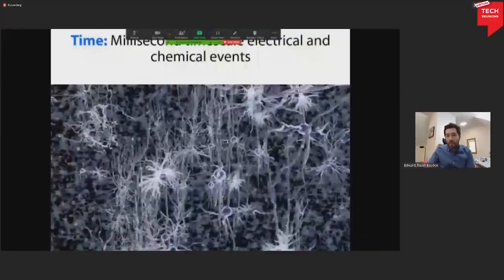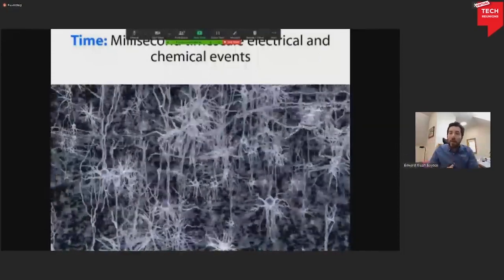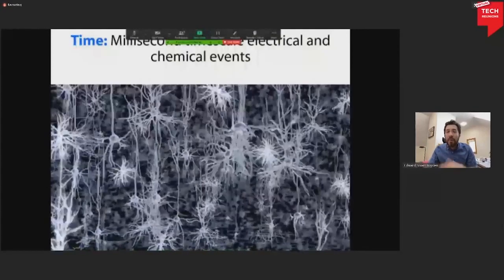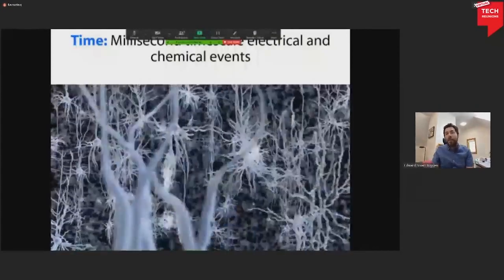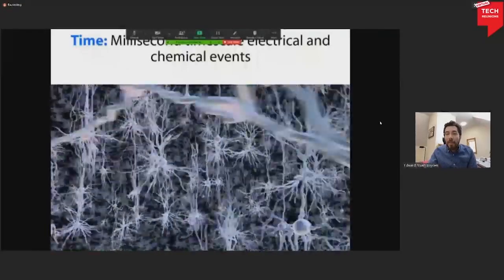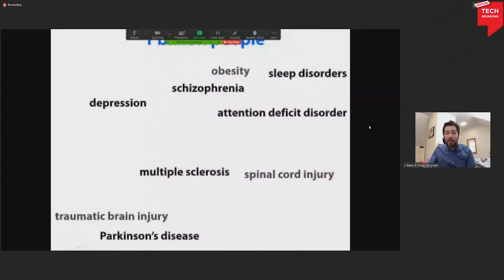Well, the answer that we proposed was, well, we need to build tools to let us see and control the brain across these very divergent scales. If we could, maybe we could understand how the brain generates things like thoughts and feelings. And of course, there are many practical implications of this quest. We're not just here to try to understand the brain for its own sake, although I think that's very important.